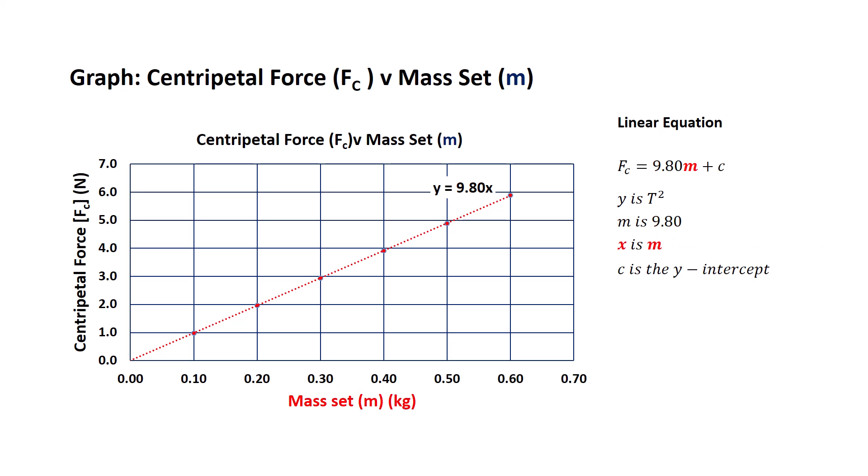X is the independent variable, in this case it's the mass set little m, so we place that in our equation. And finally c, the y-intercept, we can see here this trend line intercepts at the origin so it has a y-intercept of zero. Here's our linear equation in terms of the variables and data that we've just collected. Our equation is the centripetal force equals 9.80 times the mass set m.